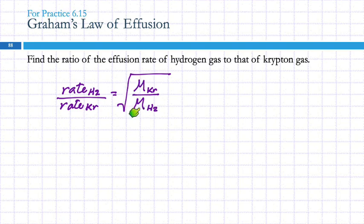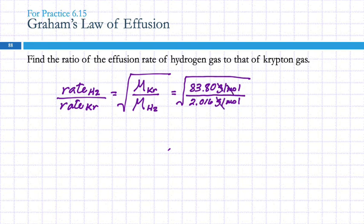The units for these technically should be in kilograms per mole, but because we're dividing, the kilogram part is going to cancel out. So it's okay to use grams per mole. Krypton is 83.80 grams per mole. In the root mean square velocity equation, we cannot use grams because the units won't work out. Here, the grams cancel and the moles cancel. So we end up with the square root of 83.8 divided by 2.016.